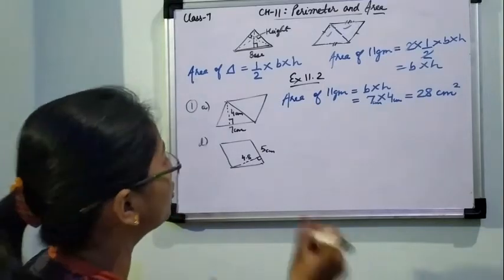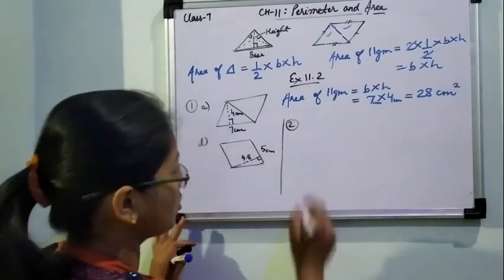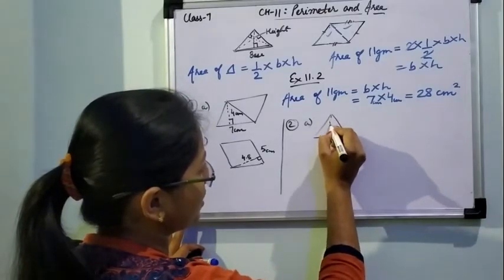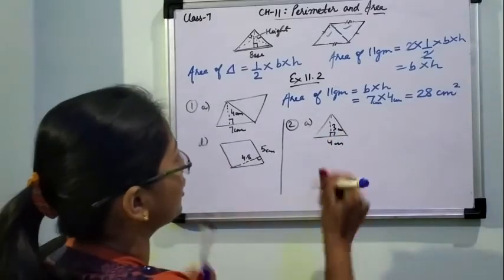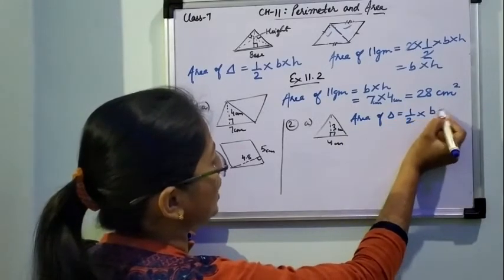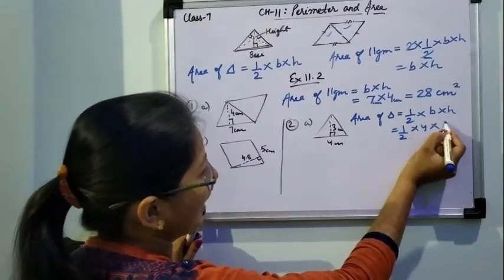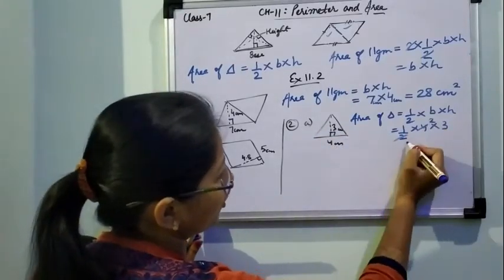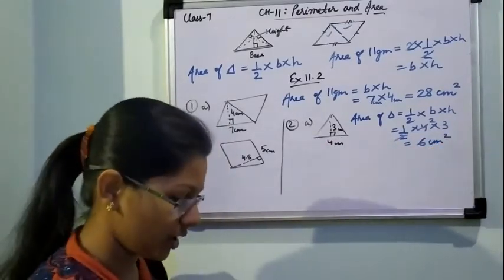Now for question number 2, we will find the area of the following triangles. In part A, the base is 4 cm and the height is 3 cm. Area of triangle = half into base into height. So half into 4 into 3 — the 2 and 4 give us 2, so we get 2 into 3 = 6 cm square.